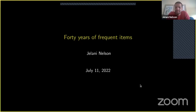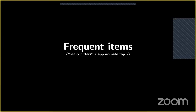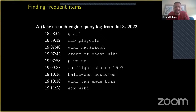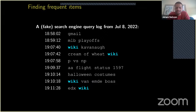This talk is about the frequent items problem, also known as the heavy hitters problem or approximate top-k. The setup is: there's a stream of items, like search queries on Google, and I want an algorithm to monitor these as they come in. When queried, it should tell me which words have been searched frequently. For example, many people search for the word 'wiki' because they don't use Wikipedia's internal search feature.